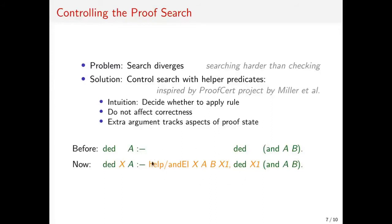The intuition behind helper predicates is that they decide whether or not a rule should be applied. So here for example I have the and-elimination rule, and the first thing we do is we call a helper predicate, so we insert this code in there which can then block the rule from being executed. This means we somehow restrict the search space, but we do not change the correctness of the prover this way. These helper predicates often need some extra information about the proof state or something like that, so we insert some extra argument X here which just has some further information.